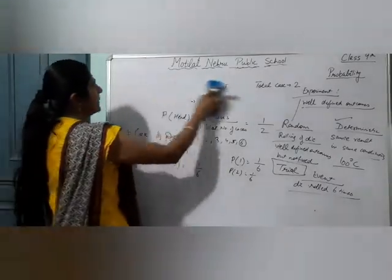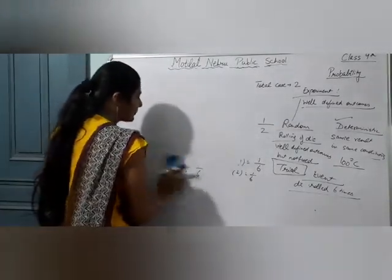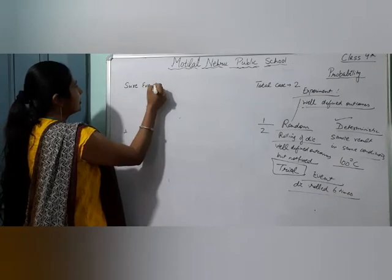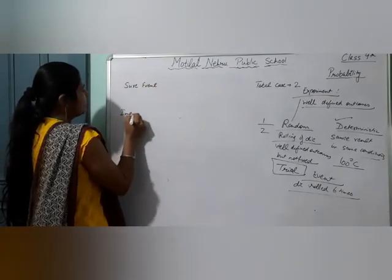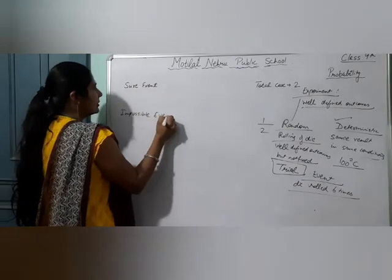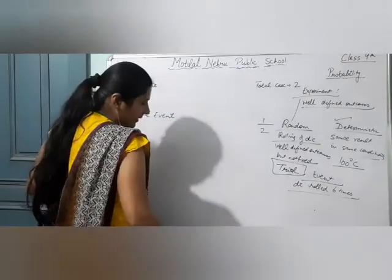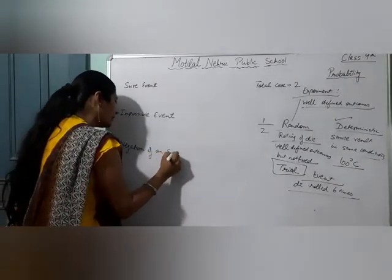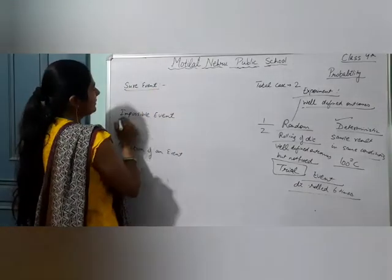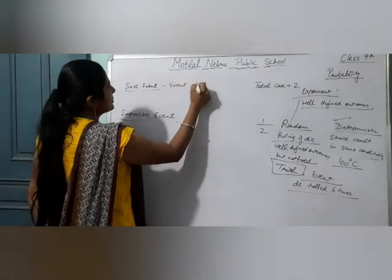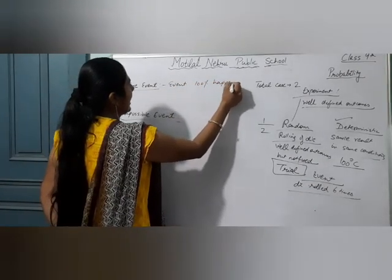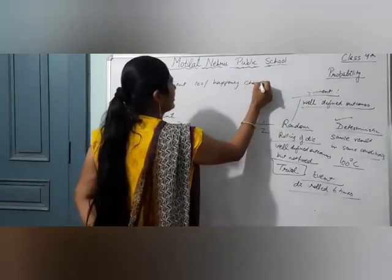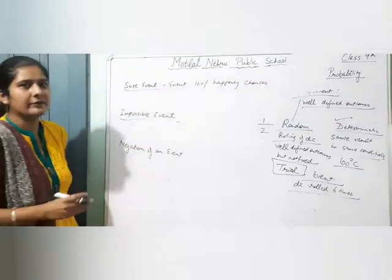जो events हैं हमारे, वो कितने types के होते हैं? Event — एक होता है हमारा sure event, एक होता है हमारा impossible event, और एक होता है हमारा negation of an event. Sure event का मतलब क्या होता है — an event which will 100% happen. जिसके होने के chances 100% होते हैं, वो होते हैं हमारे sure event.